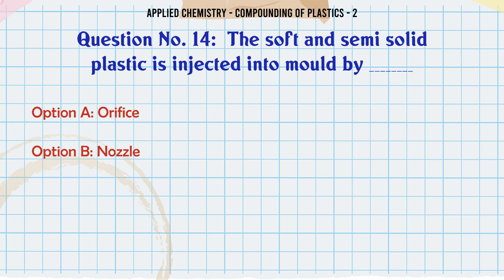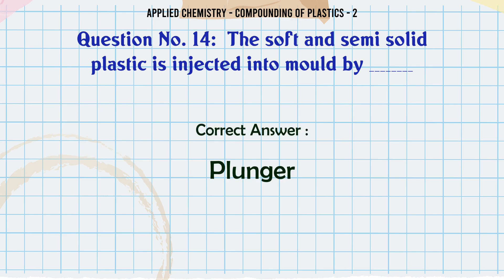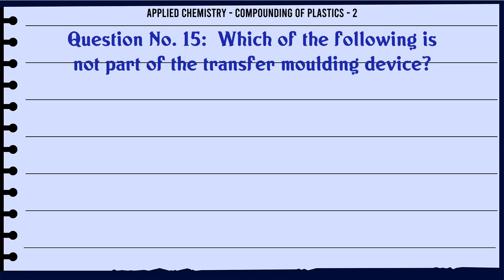The soft and semi-solid plastic is injected into mold by A. Orifice, B. Nozzle, C. Hinge, D. Plunger. The correct answer is Plunger.